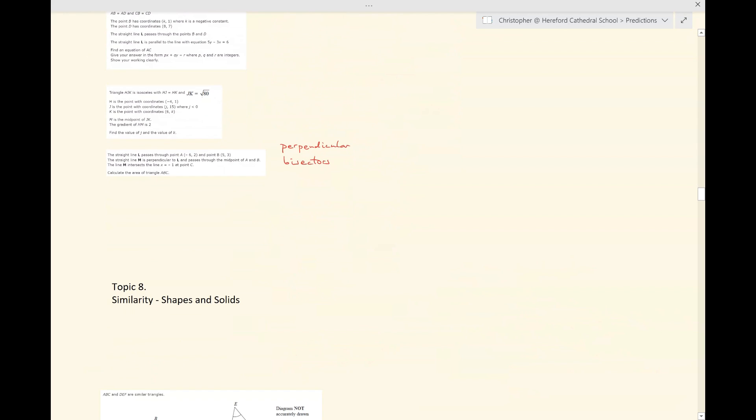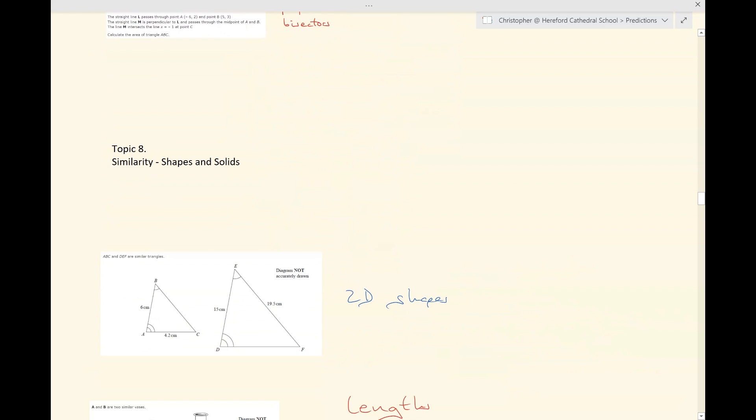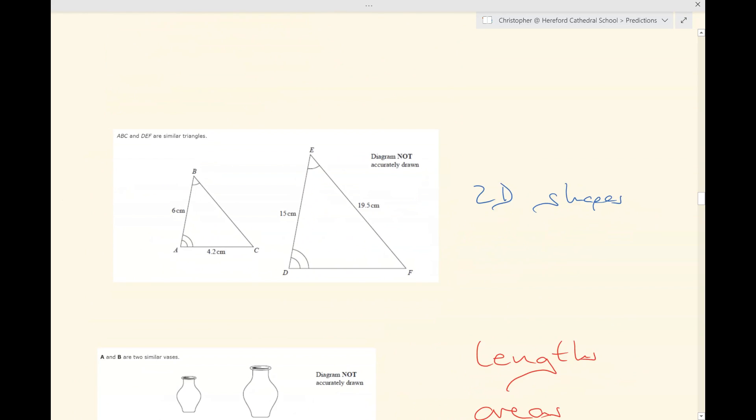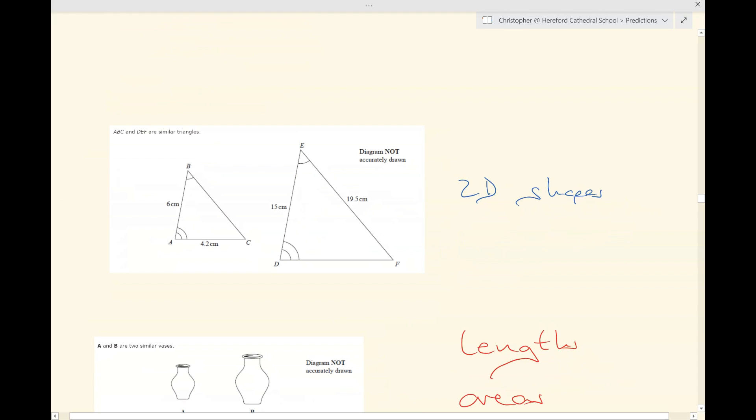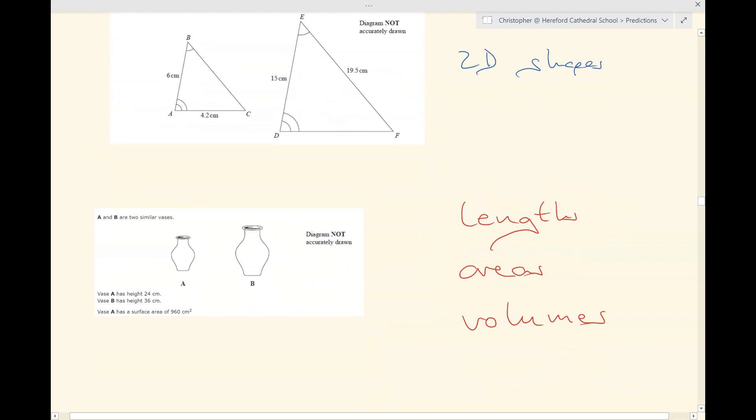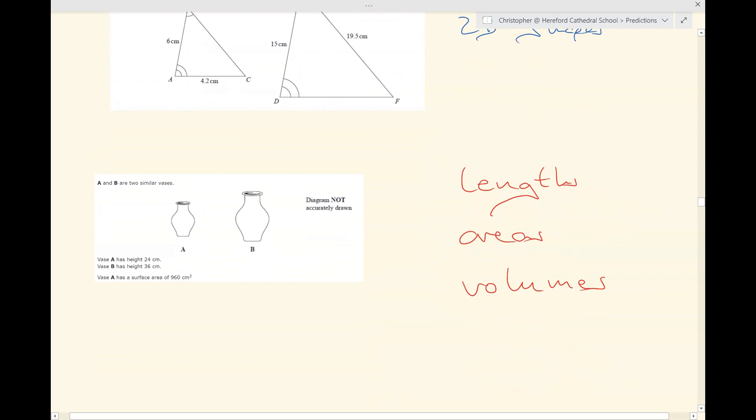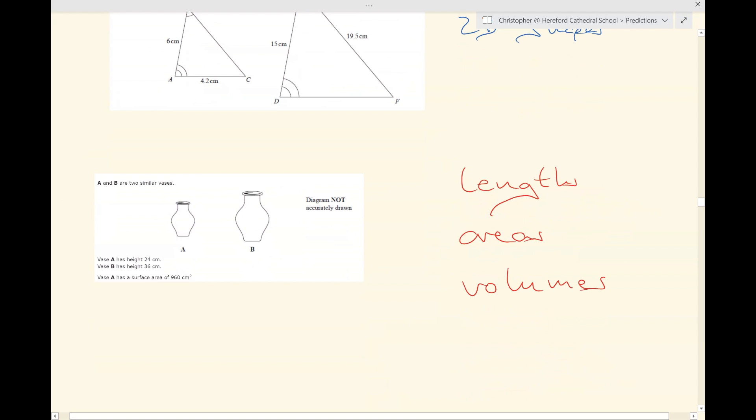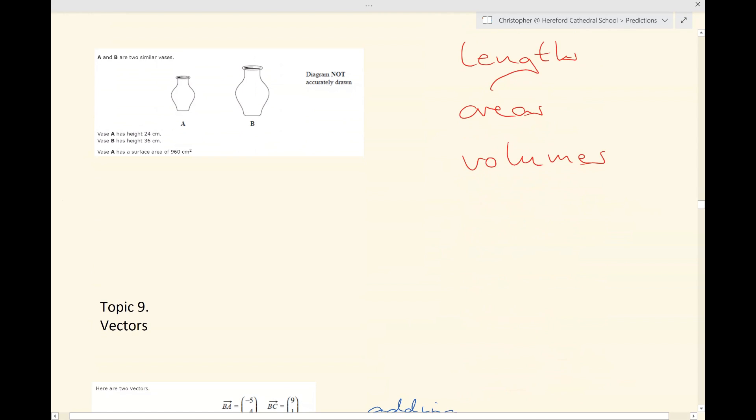I will be sure to put as comprehensive a film as I can muster in the Getting Ready for Paper 2H playlist on this. Moving on. Similarity. Sometimes questions are relatively straightforward. Here are two similar two-dimensional shapes and you have to find missing lengths. And sometimes the questions involve similar solids like these two and you need to find the scale factors between the two different lengths or the scale factors between two different areas or the scale factors between the volumes. Again, I will sort you out with a film in the playlist.